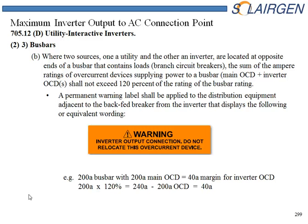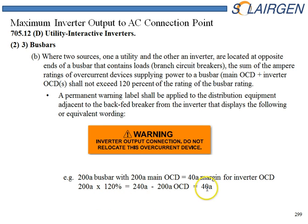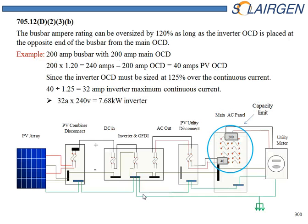The first rule allows us to connect into the main panel by placing the inverter overcurrent device at the opposite end of the main overcurrent device, or the main feed coming in from the utility. That way we're feeding two different directions and not overheating the bus bar. In this case, they want us to put a label right next to the breaker, and this breaker goes to the bottom of the panel. The bus bar cannot be oversized by more than 120% — the main overcurrent device plus the inverter overcurrent device cannot exceed 120%, which in this case is 240 amps. Here we see a line diagram representing that calculation, and we are in good compliance with the code.